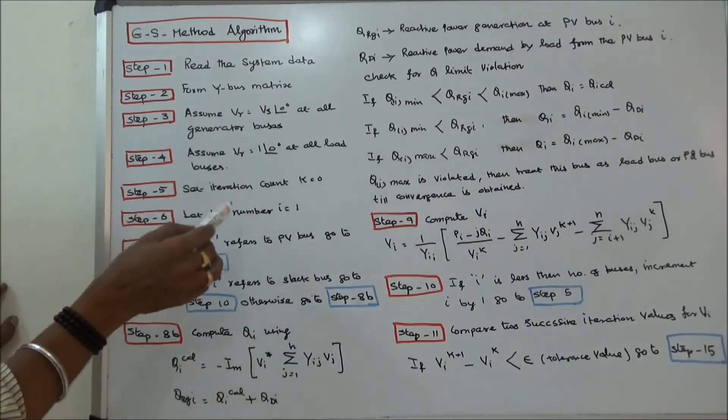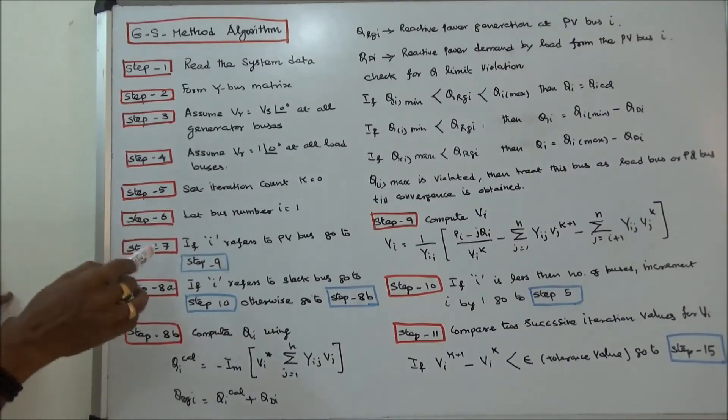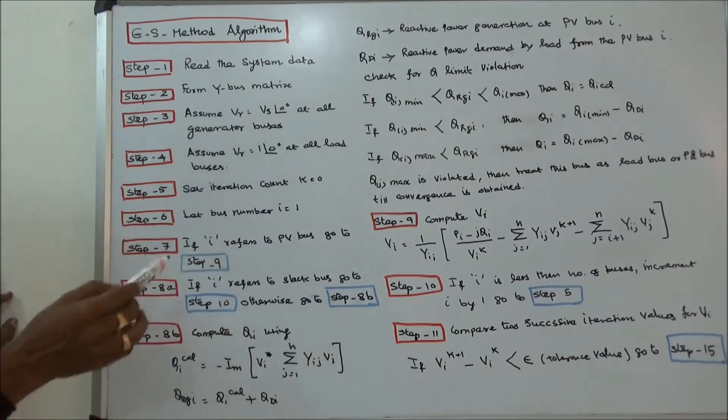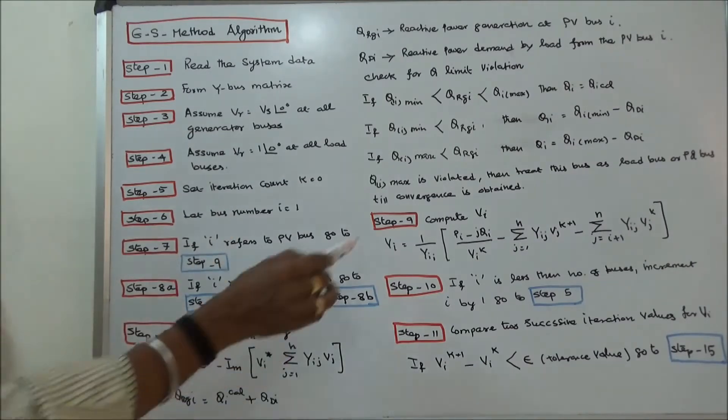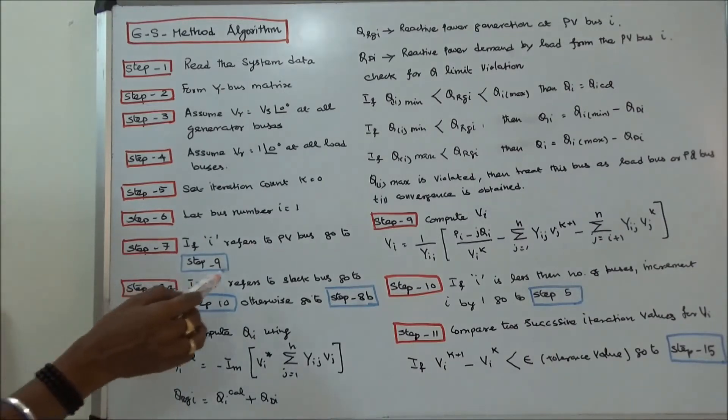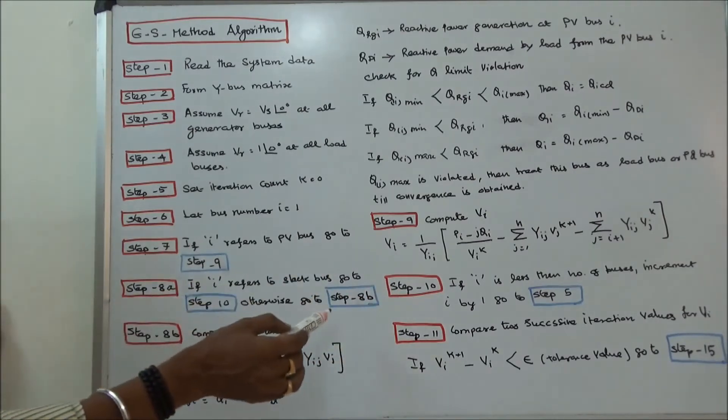Step 6: Read bus number I is equal to 1. Step 7: If I refers to generator bus or PV bus, go to step 9. This is step 9. Step 8a: If I refers to slack bus, go to step 10. Otherwise go to step 8b.